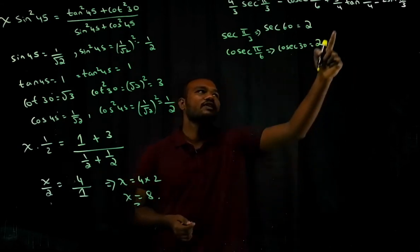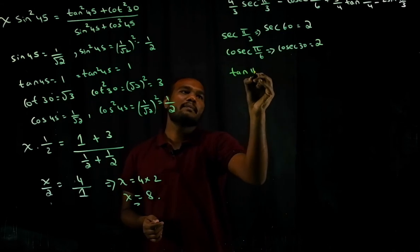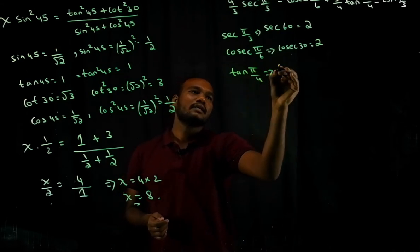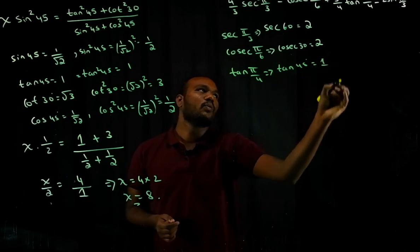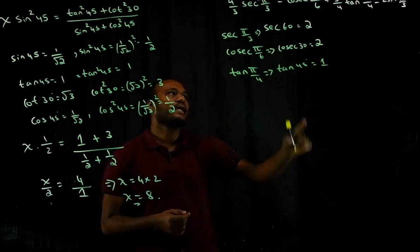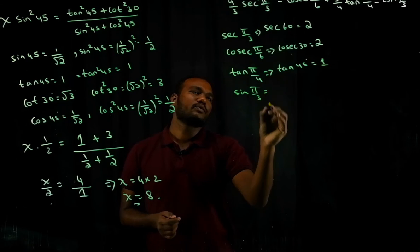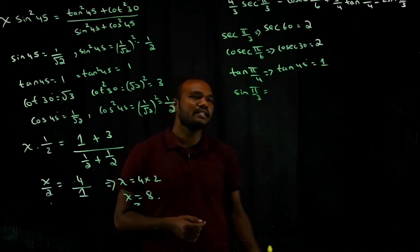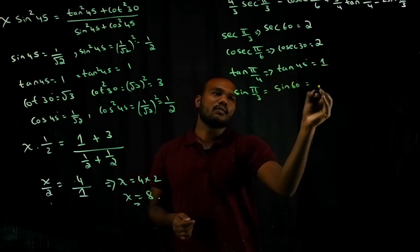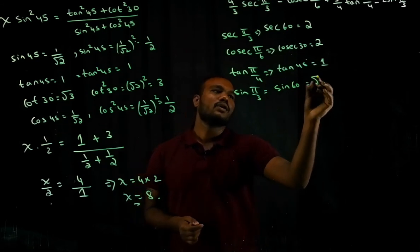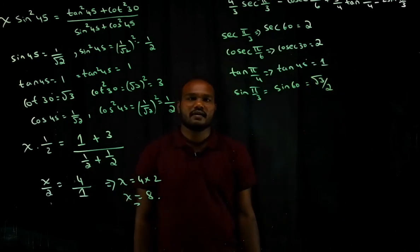Next we need tan(π/4), which is tan 45° = 1. And sine(π/3) is sine 60° = √3/2.